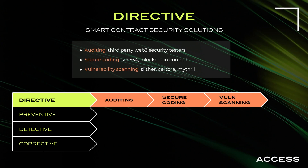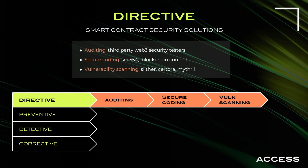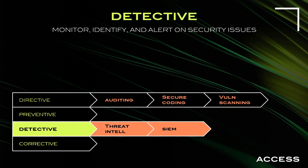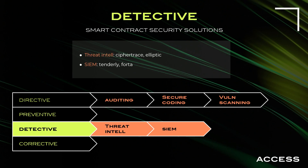For directive controls there's great third-party auditing and testing. There's secure coding — I wrote and teach a five-day course on smart contract security for SANS. Council is another good one — they have courses and certifications. For vulnerability scanning, some of the best tools in this open source world are free: Mythril and Slither are great tools you can put in your pipeline for SAST scanning. For detective controls, CipherTrace and Elliptic are really good threat intelligence solutions. For SIEM and security event monitoring, we like Tenderly — we've done partnerships with them. Forta is another good one, and many of these integrate with platforms like Splunk.